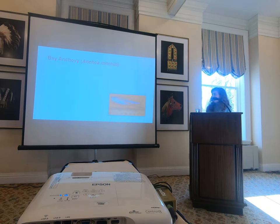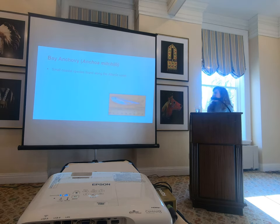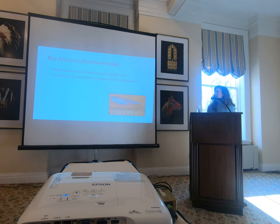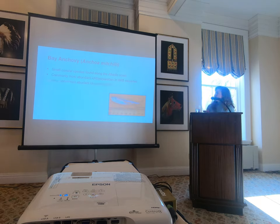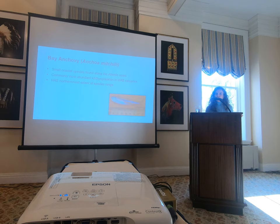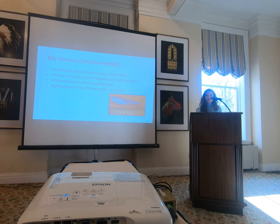Going into Bay Anchovy: they're a small coastal species found along the Atlantic coast. They only get to be about 10 centimeters — they're very cute; this figure is not to scale, obviously. They're commonly the most abundant ichthyoplankton in mid-Atlantic white estuaries. The Hudson River estuary serves as the northernmost extent of the species range, going all the way down to the Gulf of Mexico. They're a significant part of the Hudson River estuary community and are forage fish.